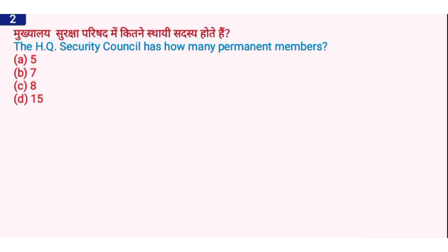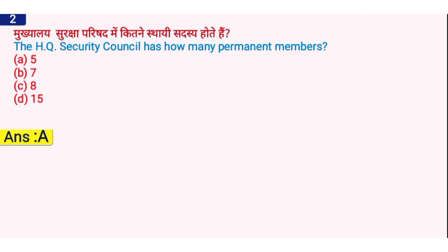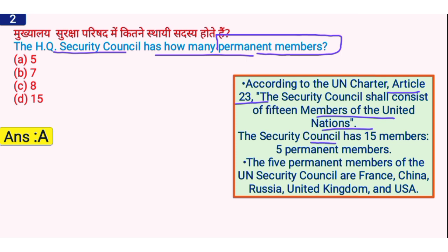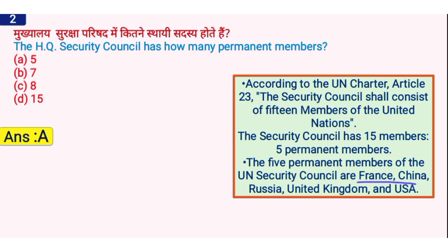The next question: the Security Council has how many permanent members? The right answer is option A, which is 5. According to the UN Charter Article 23, the Security Council shall consist of 15 members of the United Nations — 5 permanent and 10 non-permanent members. The 5 permanent members of the UN Security Council are France, China, Russia, United Kingdom, and USA. You have to remember their names as they are asked in exams.